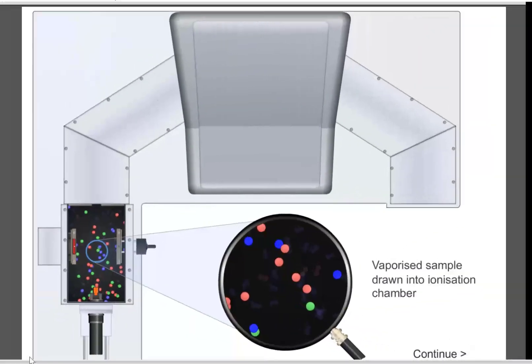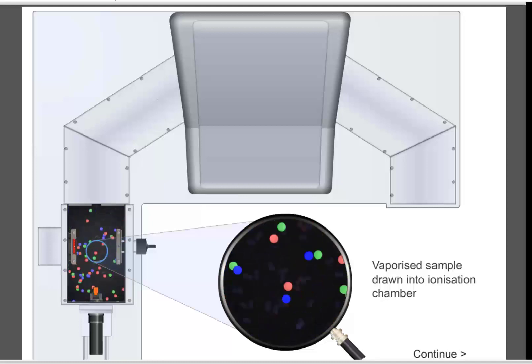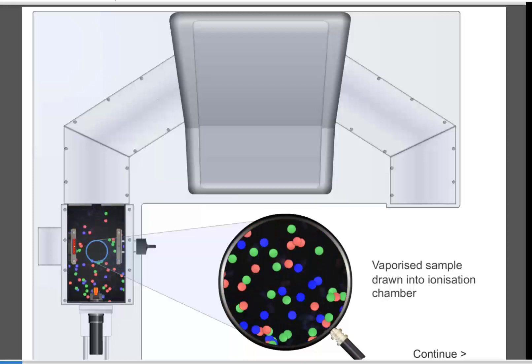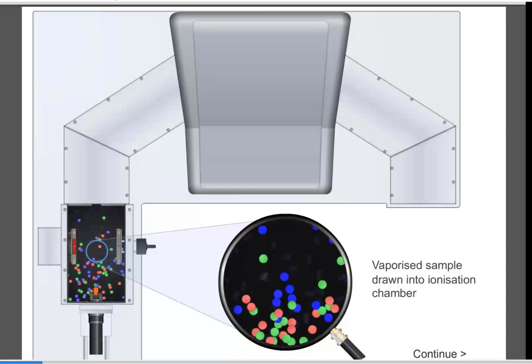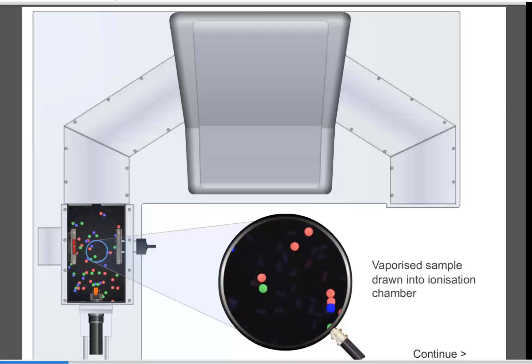This simulation provides a summary and visual representation of the working of a mass spectrometer. We start with a vaporized sample in the ionization chamber. In this example, we have a mixture of different molecules, as we can think of each colored dot corresponding to a molecule of a different mass.